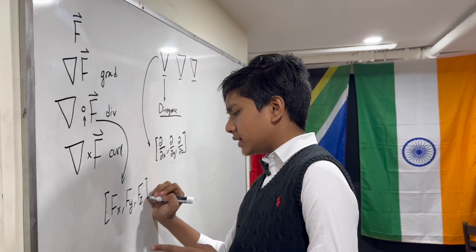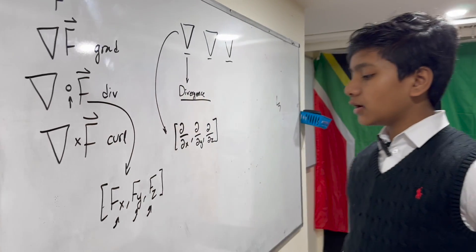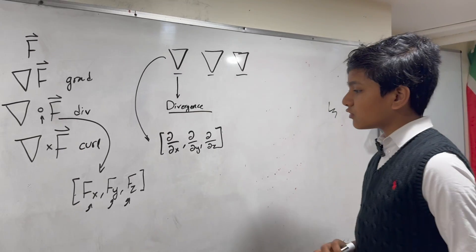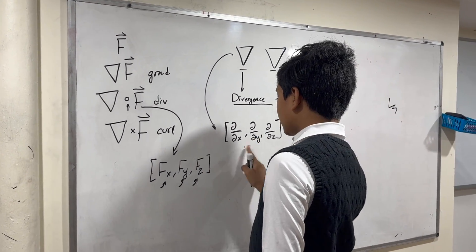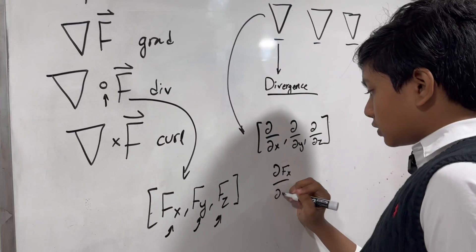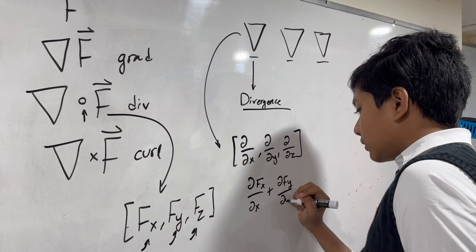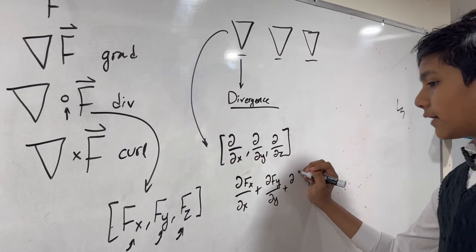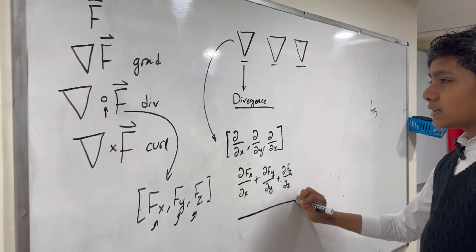Don't mistake this for Leibniz notation. These are not partial derivatives. They are simply the components of the vector function. So, then, once you dot these two together, it gives you partial fx over partial x, plus partial fy over partial y, plus partial fz over partial z. So, this is the divergence.